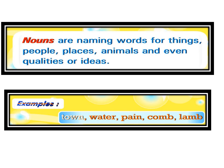Students, we have all studied about nouns and pronouns — these are the parts of speech. The definition given here: nouns are naming words for things, people, places, animals, and even qualities or ideas. For example: town, water, fame, calm, lamp. So any name of a person, place, animal, or any kind of quality like honesty, beauty, or ideas — it's all about nouns.